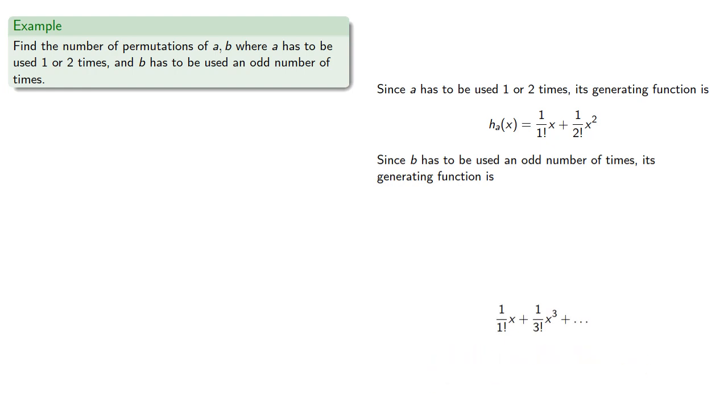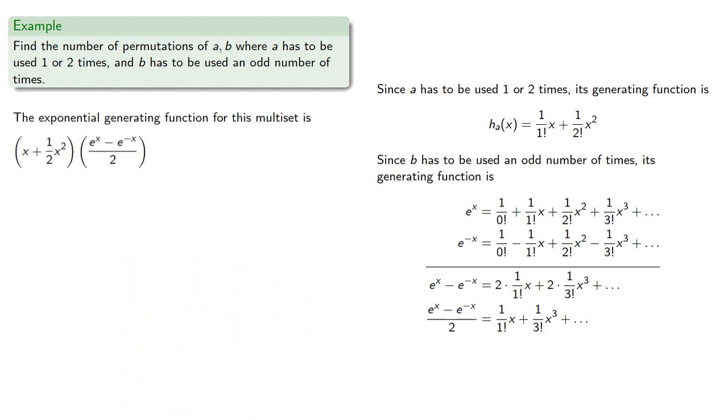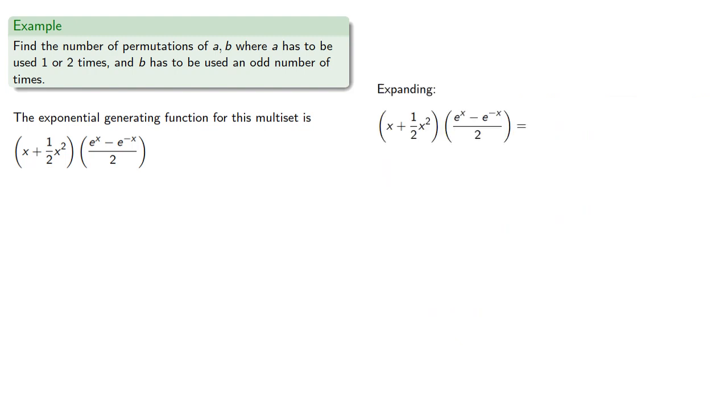And we can get that if we take our Taylor series for e to the x, for e to the minus x, subtract them, and divide by 2. And so our exponential generating function for the multiset will be the product, which we can expand.